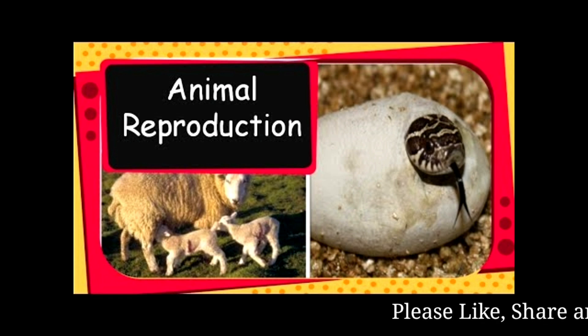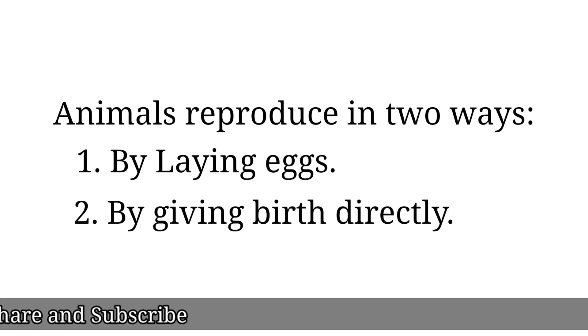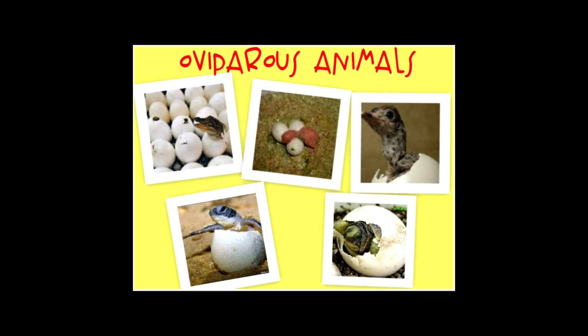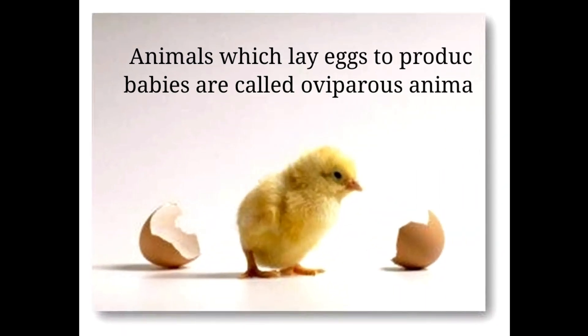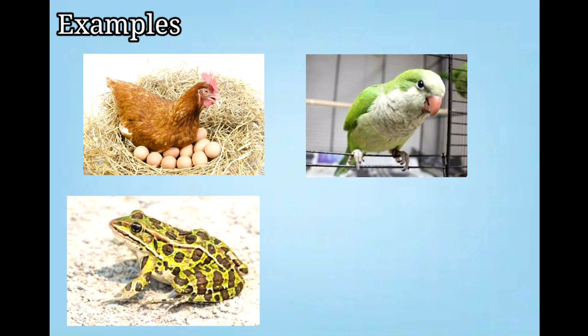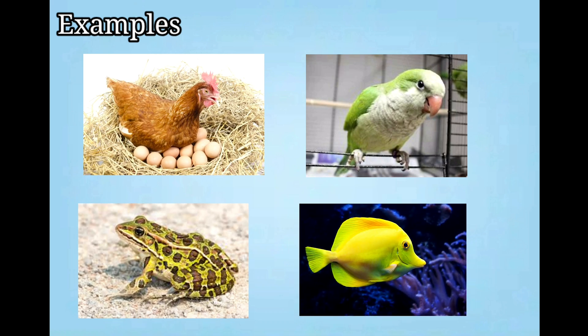Animals reproduce with the help of two ways: by laying eggs or by giving birth directly. Animals which lay eggs to produce babies are called oviparous animals. Some examples of oviparous animals are hen, parrot, frog, fish, etc.